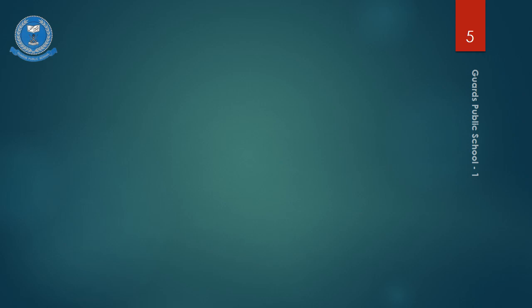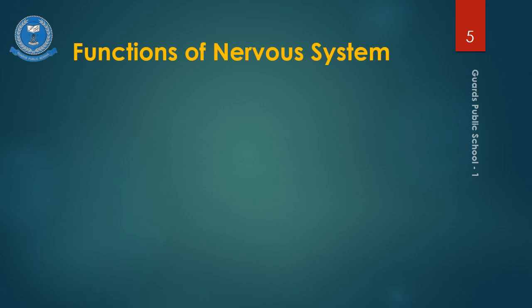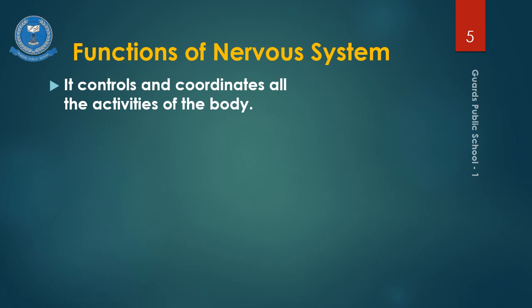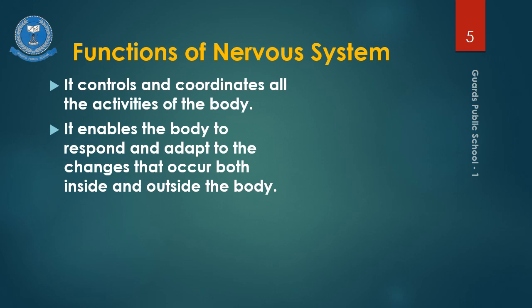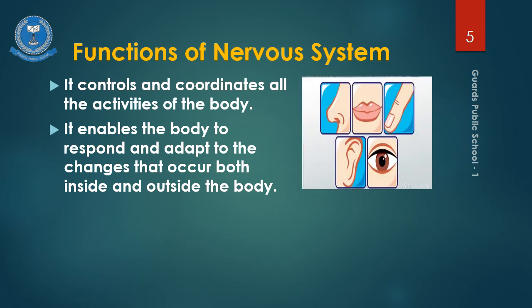Now we will understand the functions of the nervous system. Our nervous system controls and coordinates all the activities of the body. It also enables the body to respond and adapt to changes that occur both inside and outside of the body. Our nervous system is responsible for responding to the messages it receives. It receives messages from sense organs by the help of nerves and responds to these messages by the help of the brain. All these functions involve the participation of our sense organs, nerves, spinal cord and brain.